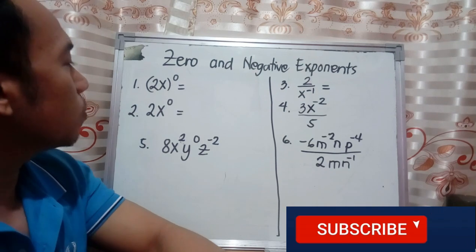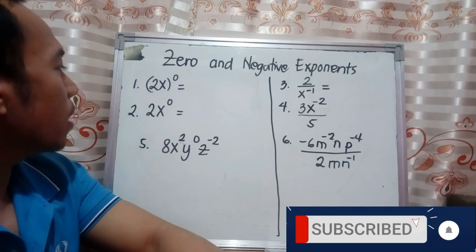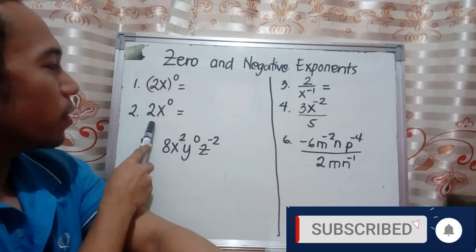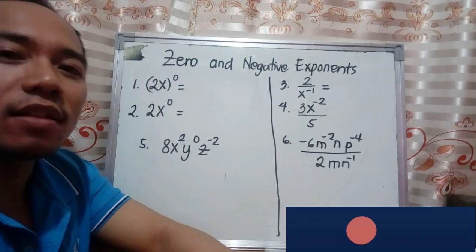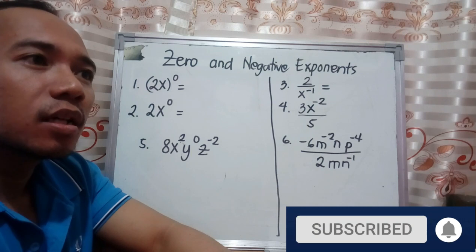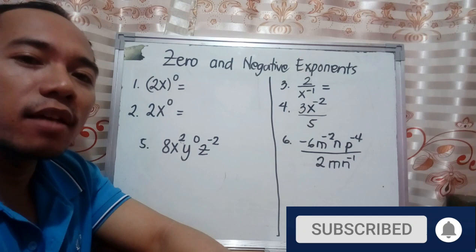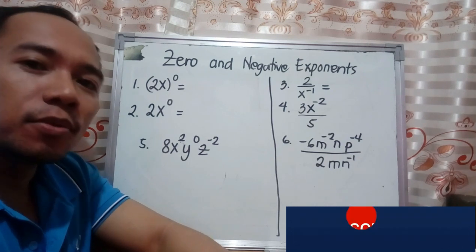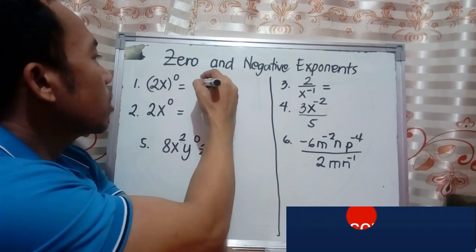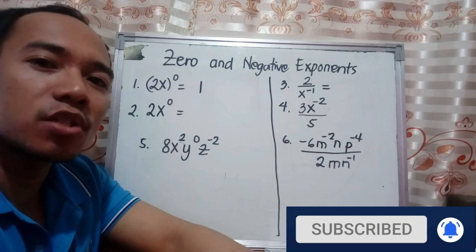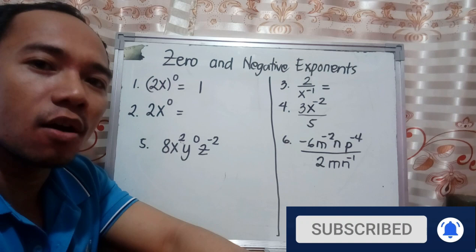What's the difference between the quantity (2x) raised to zero and 2x raised to zero? Here, if you have a quantity, that means the whole 2x is the base with exponent zero. If the exponent is zero, the value of the whole expression becomes one. So this is equal to one — any expression with exponent zero is equal to one. That's the basic concept.